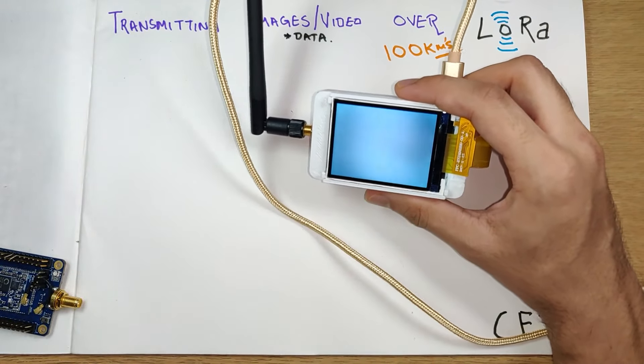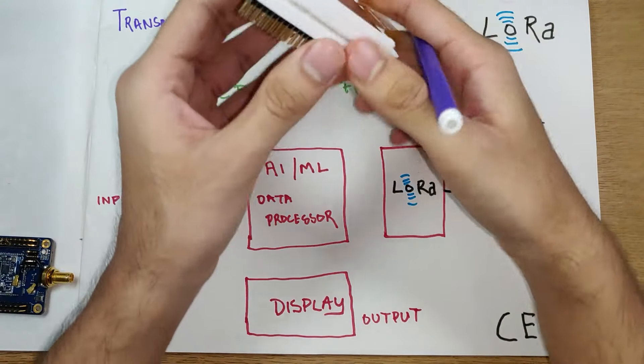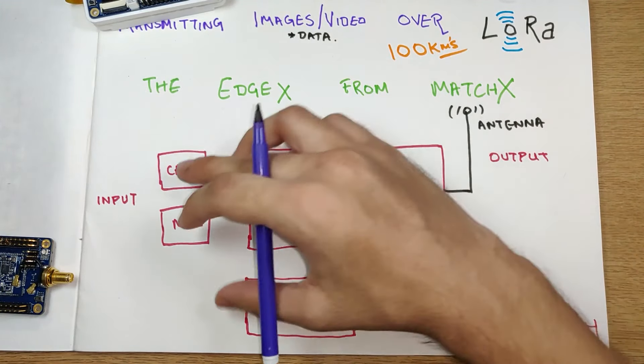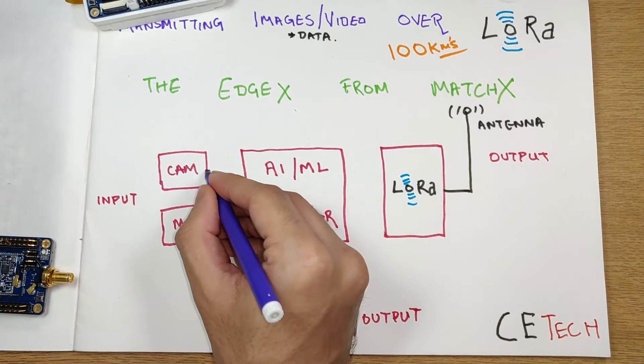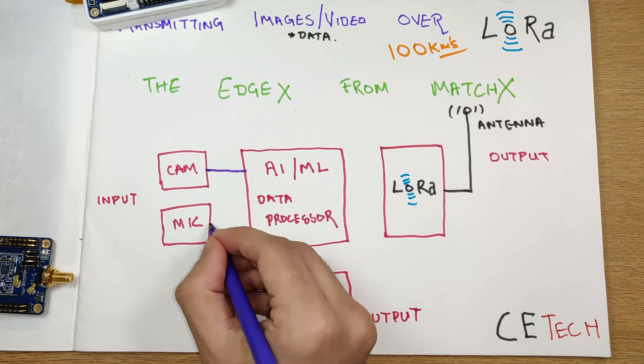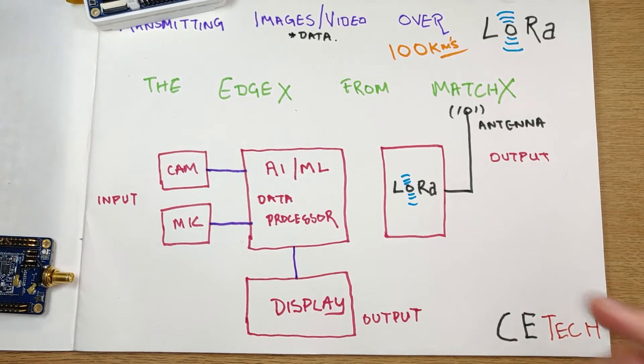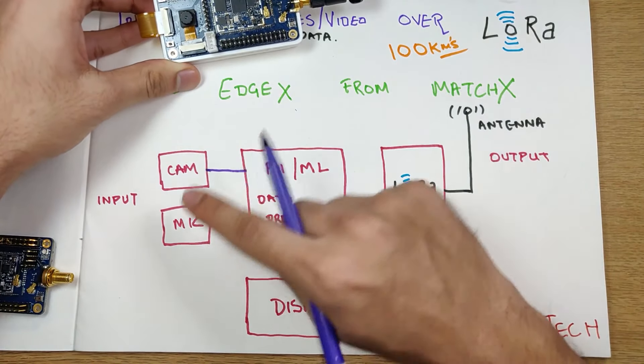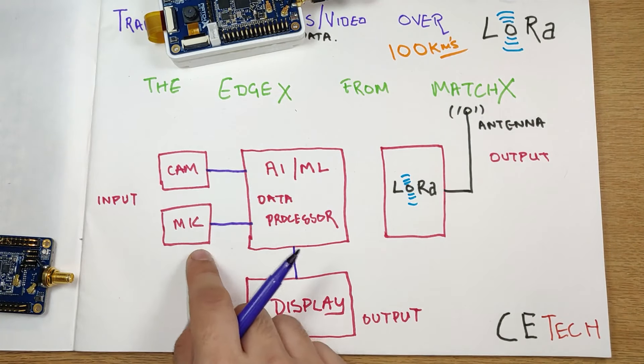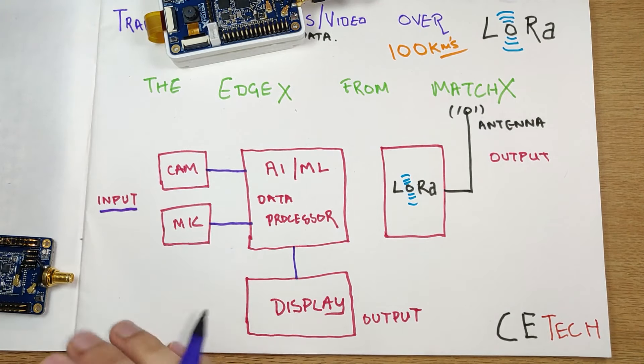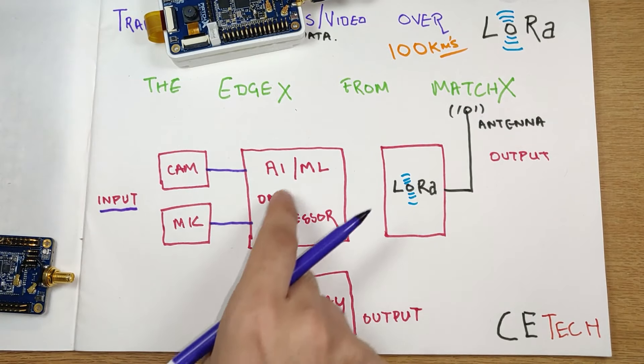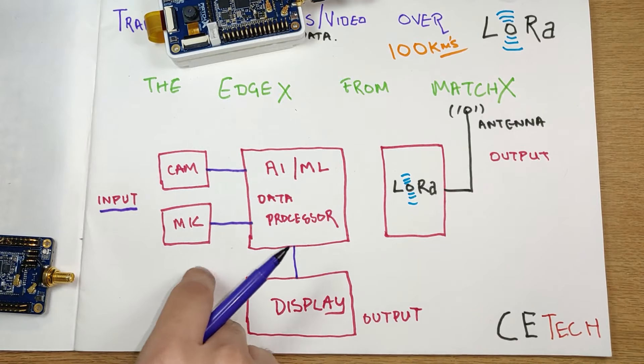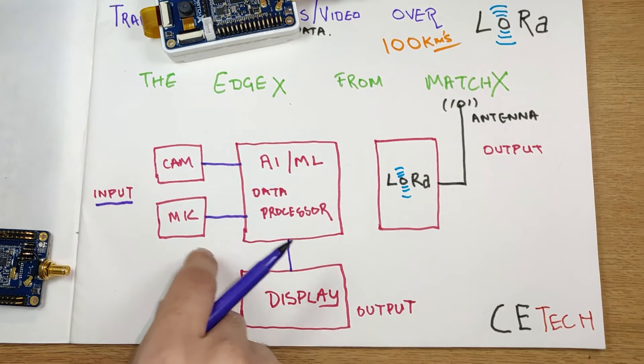Moving on quickly to how this functions. Our EdgeX device from MatchX basically consists of these blocks connected to the central data processing unit. For the input side, we have a camera and mic. Using the camera and mic as input devices, we feed in data to the AI ML data processor, the neural network accelerator.